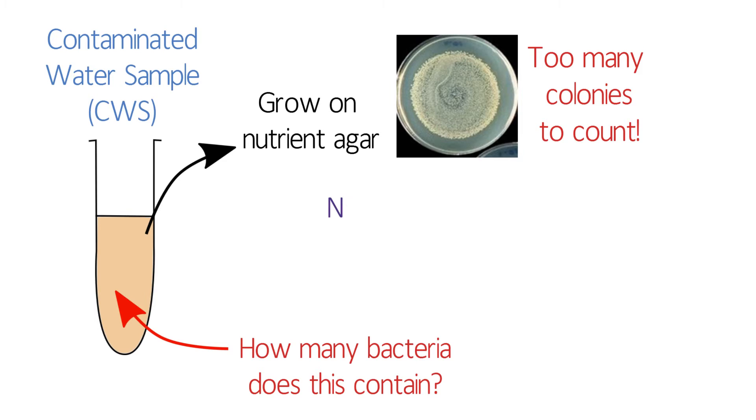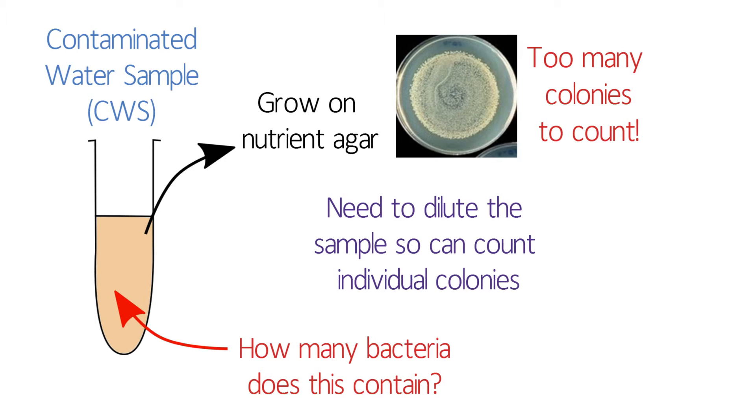We therefore need a way to dilute the sample enough so that we can count individual colonies and work out how many colony-forming units were present in the original sample.